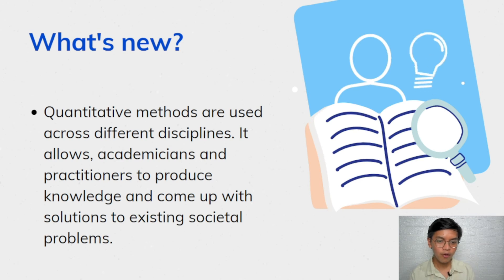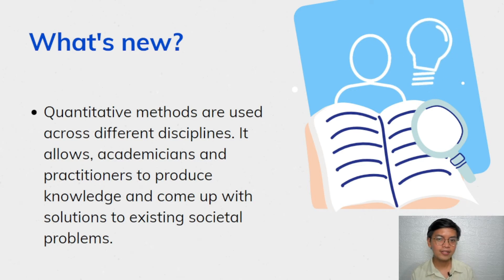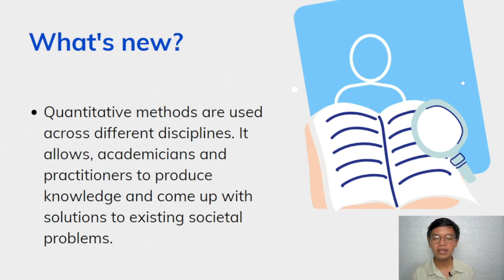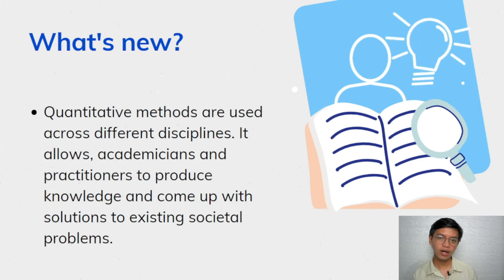We already know that quantitative methods are used across different disciplines. It allows academicians and practitioners to produce knowledge and come up with solutions to existing societal problems. So one way of producing solutions to a certain problem is the use of quantitative methods. We can see that in politics, in governance, in medicine, in education, in businesses, in the fields of psychology, in the fields of anthropology, and across different disciplines. We said in the previous video that we are living in a world full of quantitative research.